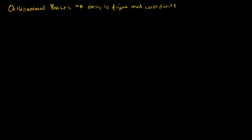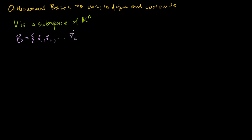Let's say I have some subspace V, where V is a subspace of Rn. And let's say we have B, which is an orthonormal basis. B is equal to V1, V2, all the way to Vk, and it is an orthonormal basis for V — which is just a fancy way of saying that all of these vectors have length 1 and they're all orthogonal with respect to each other.